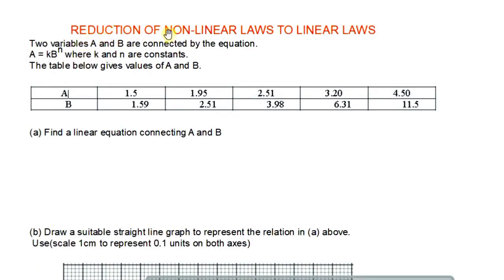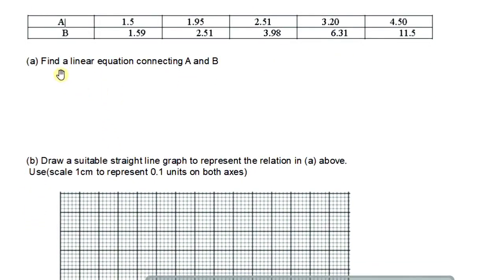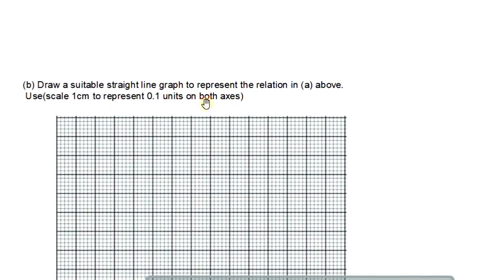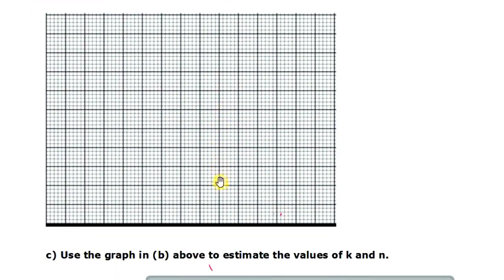The question today is about reduction of nonlinear laws to linear laws. The question reads: two variables a and b are connected by the equation a equals k times b raised to n, where k and n are constants. The table below gives values of a and b. Find a linear equation connecting a and b for part a. Then for part b, draw a suitable straight line graph to represent the relation in part a, using the scale of one centimeter to represent 0.1 units on both axes.